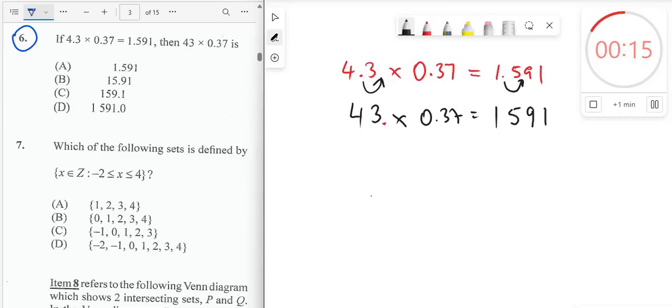So our answer is going to be 15 point. The point will now be here between 5 and 9. 15 point 9, 1. And so our answer is B.